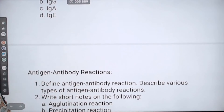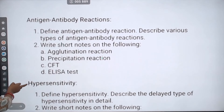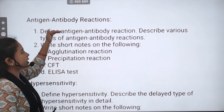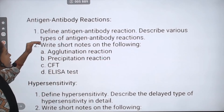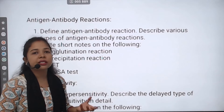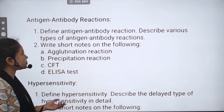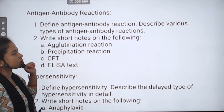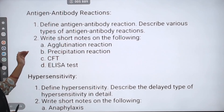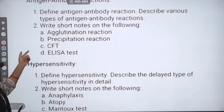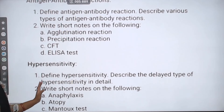Now let's talk about antigen-antibody reactions. Define antigen and antibody reactions — you will have various types of antigen-antibody reactions to mention and write. Write short notes on: agglutination reactions, precipitation reactions, CFT (complement fixation test), and ELISA tests. These are important topics.